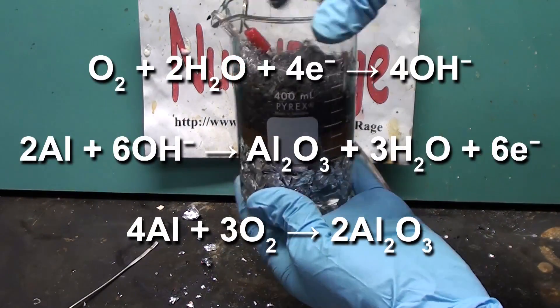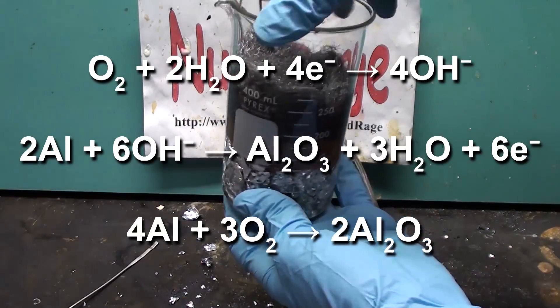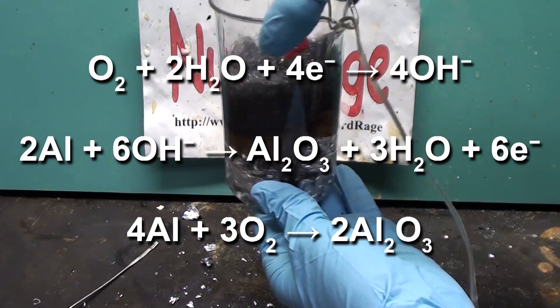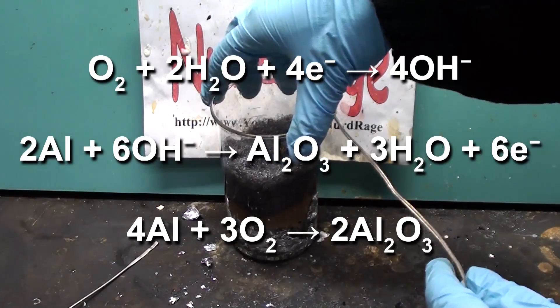What's happening is that the iron catalyzes the reaction of oxygen with water to make hydroxide, while the aluminum reacts with hydroxide to form aluminum oxide.